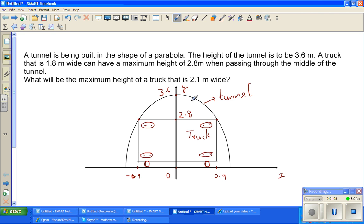Now the question is, what is the maximum height of a truck that is 2.1 meters wide? That means here you have 1.05, this is negative 1.05. Negative 1.05 is half of 2.10, so here you have positive 1.05.